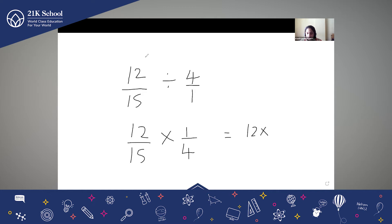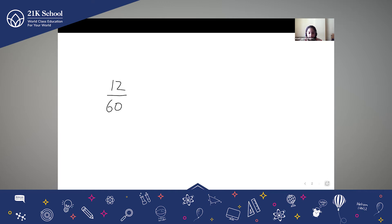Now you all know how to multiply. So 12 × 1 upon 15 × 4. 12 × 1 is 12, 15 × 4 is 60. So 12/60 can be reduced — it can be divided by 12. So 12 ÷ 12 is 1 and 60 ÷ 12 is 5. So 1/5 is our final answer.